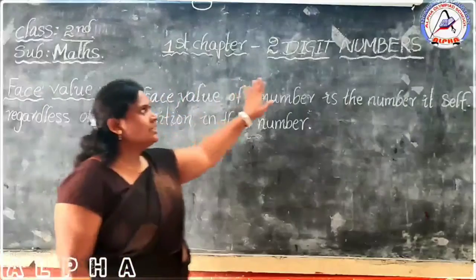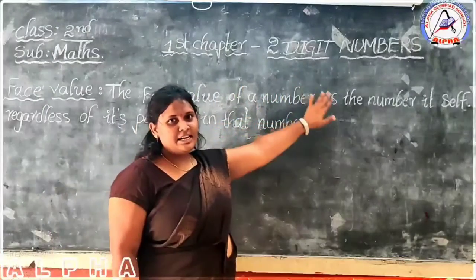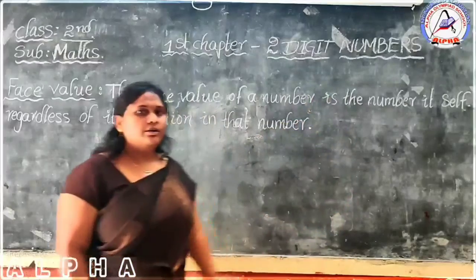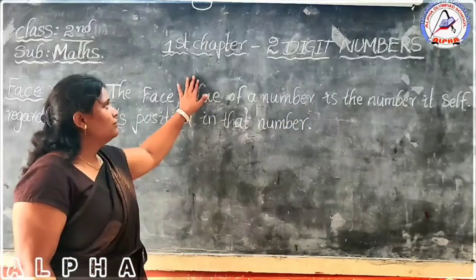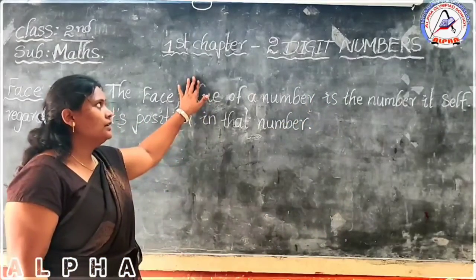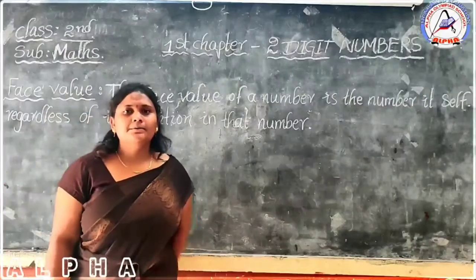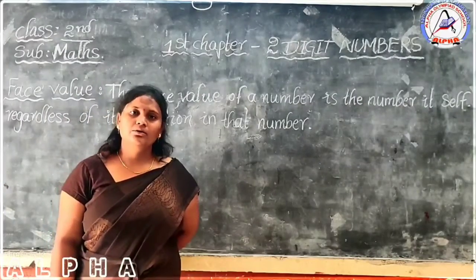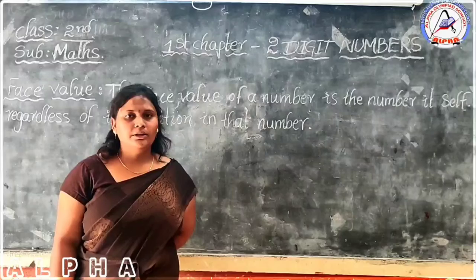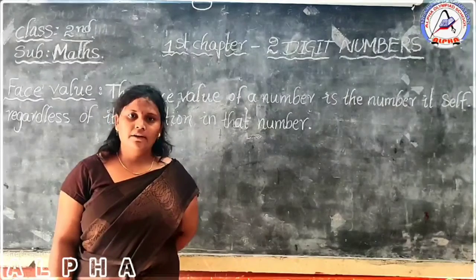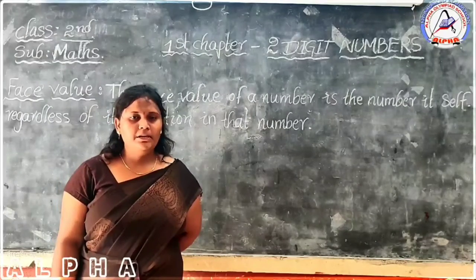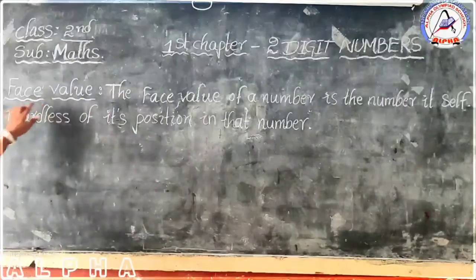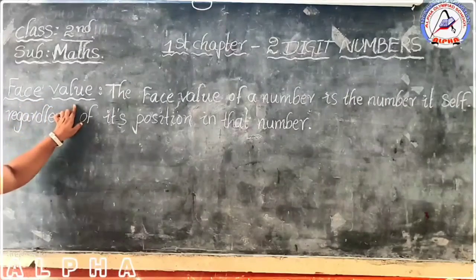Our first chapter name is 'Two Digit Numbers.' In our first chapter, we have so many types of subheadings — it means so many types of topics. Today we are going to learn about our subtopic. One of the subtopic names is 'Face Value.'